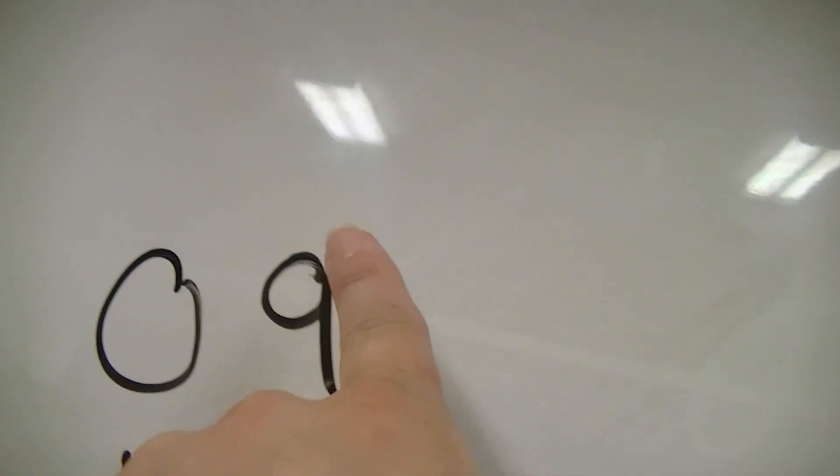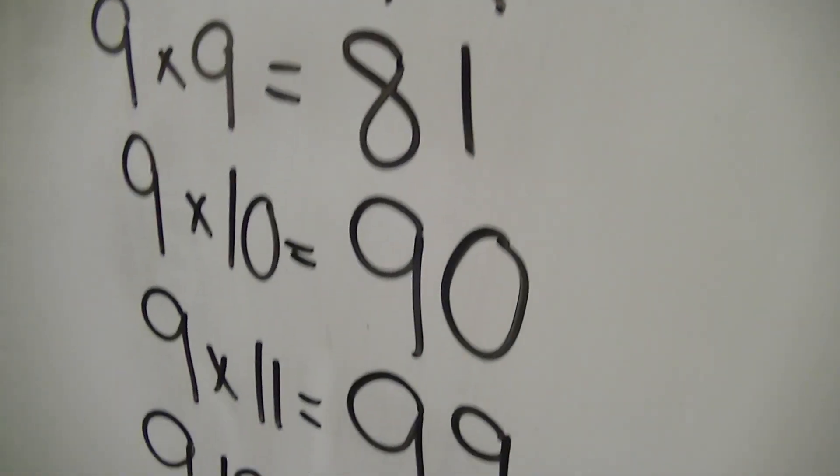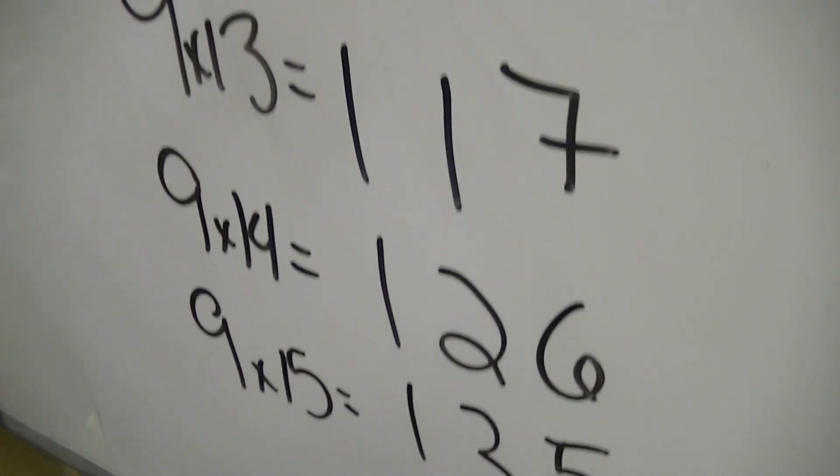Going up the other way, I'm going to start with nine, and I'm going to say nine, eight, seven, six, five, four, three, two, one, zero, nine, eight, seven, six, five.